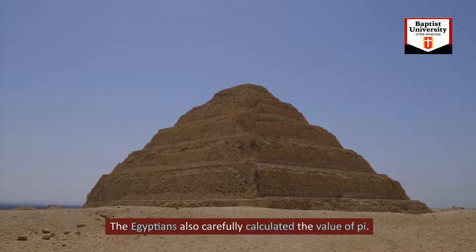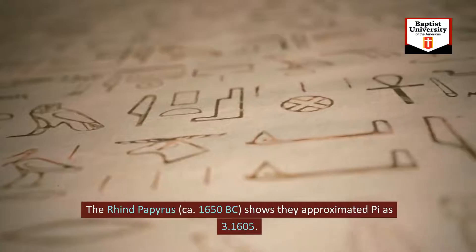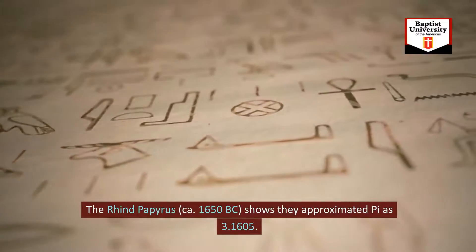The Egyptians also carefully calculated the value of pi. The Rhind papyrus, circa 1650 BC, shows they approximated pi as 3.1605.